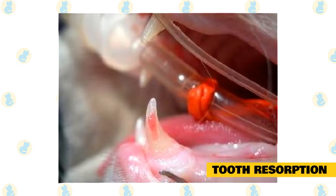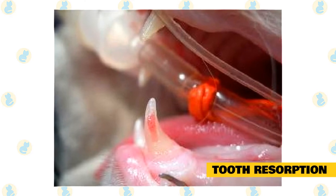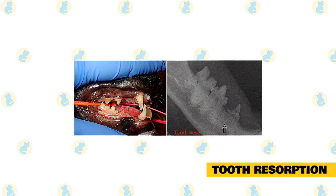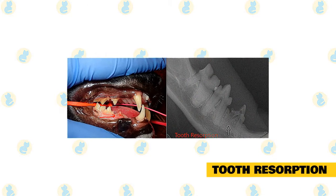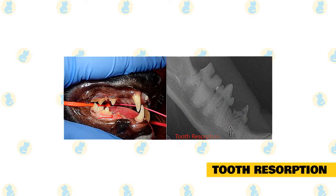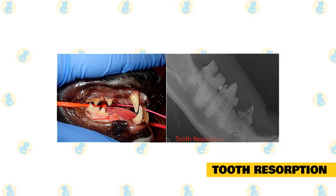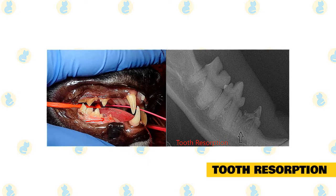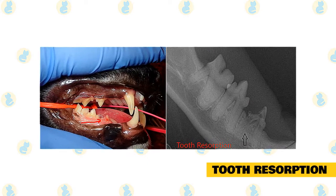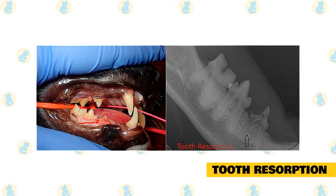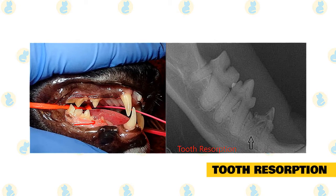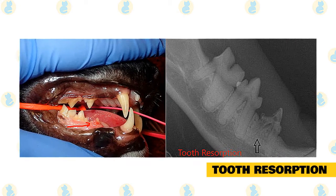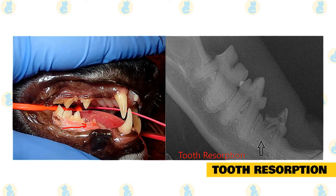Resorptive lesions can vary in severity from relatively small defects at the gum line to large defects in the enamel of the tooth crown. Tooth resorption may or may not be associated with gingivitis. It can be very painful, so affected cats may be reluctant or unwilling to eat, may drool, turn their heads to the side while eating, and may be irritable. Veterinarians usually make a diagnosis by examining the mouth carefully, probing any lesions, and examining x-rays, which require anesthesia.